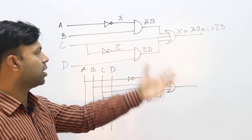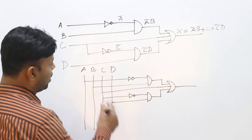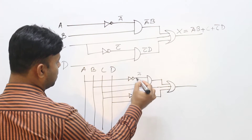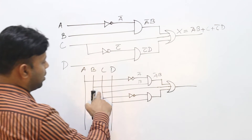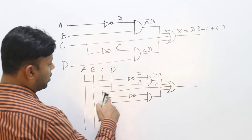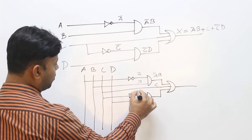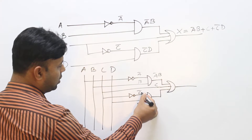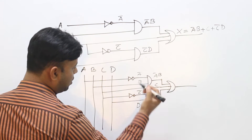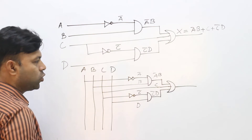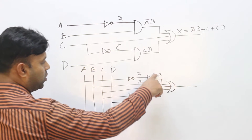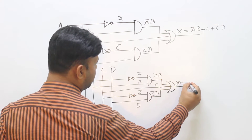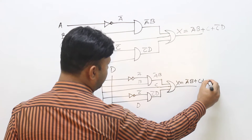So we can make a logical circuit. We will use a NOT gate for A. Using AND gate, combining C NOT and D. The output X is equal to A NOT B plus C plus C NOT D.